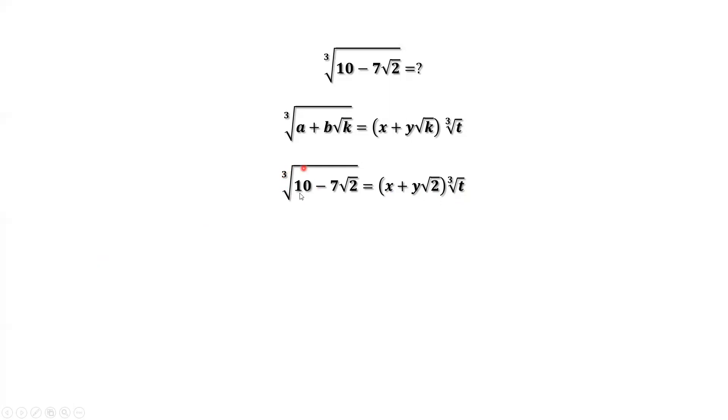How to get rid of the third root sign? From this equation, both sides, we can take the third power on both sides. Then we have 10 minus 7 times square root of 2 equals t times x plus y times square root of 2, then to the power of 3.